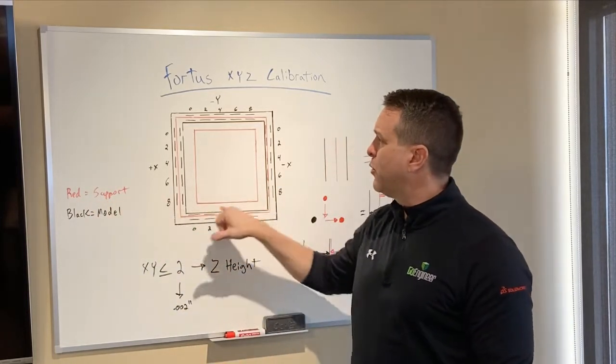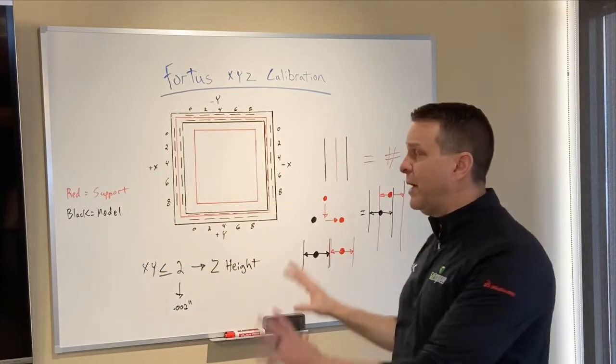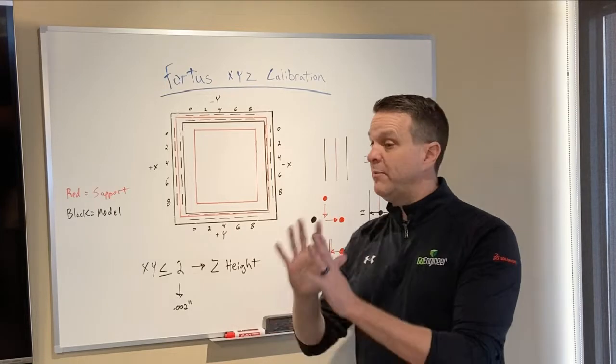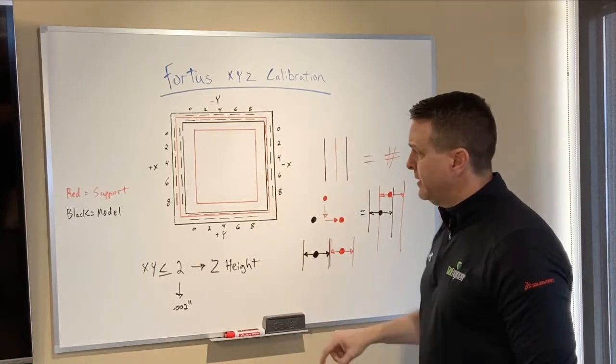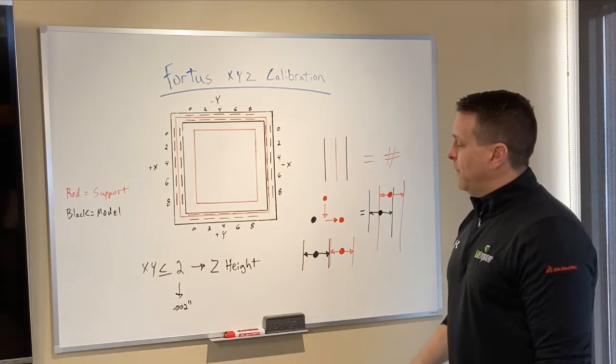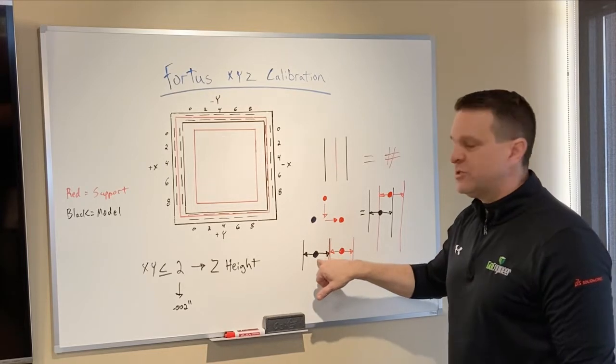Red in this case is equal to support material. Black is going to be equal to the model material. Now, I apologize for my artwork because I am clearly not an art major. I did my best. I actually cheated and used a ruler for most of it. Okay, so what are we looking for?